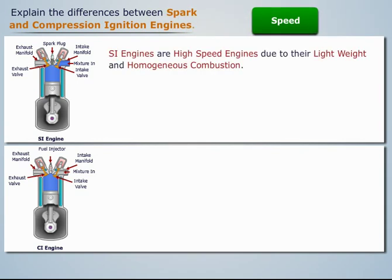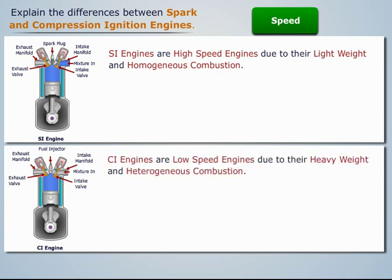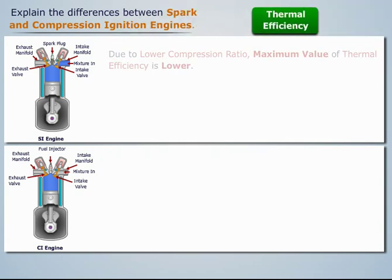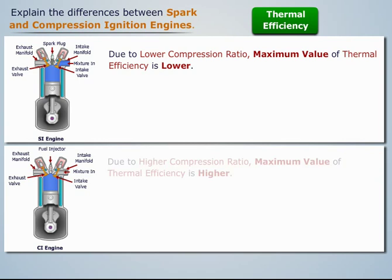Spark ignition engines are high-speed engines due to their light weight and homogeneous combustion, whereas compression ignition engines are low-speed engines due to their heavy weight and heterogeneous combustion. Due to lower compression ratio, the maximum value of thermal efficiency is lower in spark ignition engines, whereas due to higher compression ratio, the maximum value of thermal efficiency is higher in compression ignition engines.